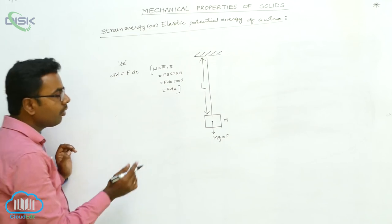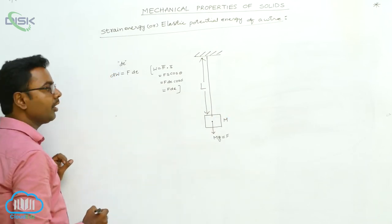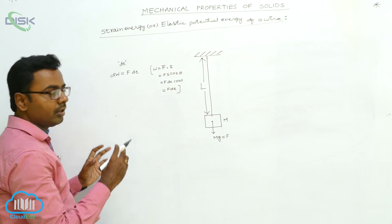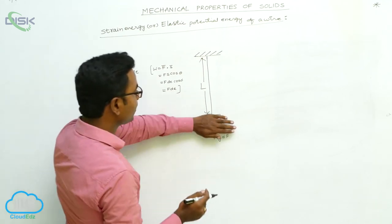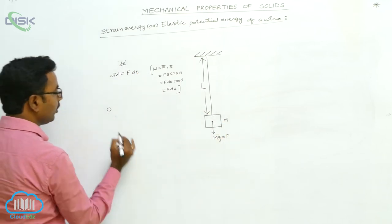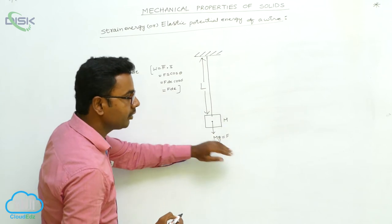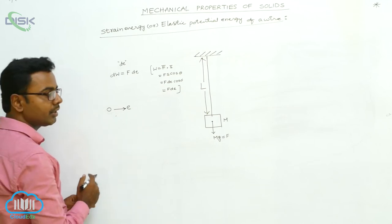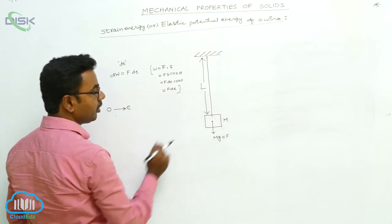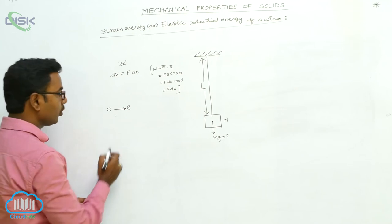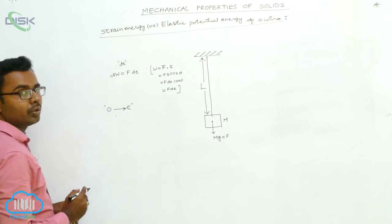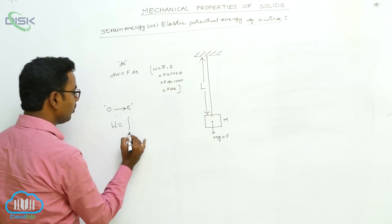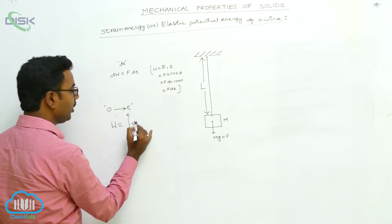This DW is the small work done to produce the small elongation DE only. Now we have to find the total work done to produce the total elongation small e. Initially, when no load is suspended, elongation is 0. After the load is suspended, the wire elongates to E. So the total elongation produced is E, and we integrate DW between the limits 0 to E.